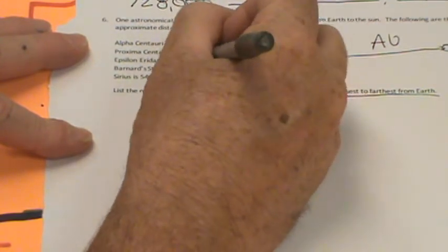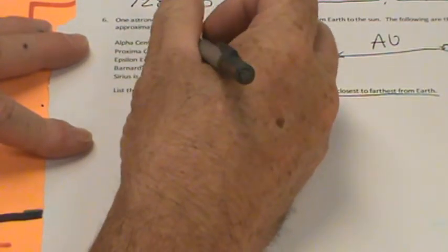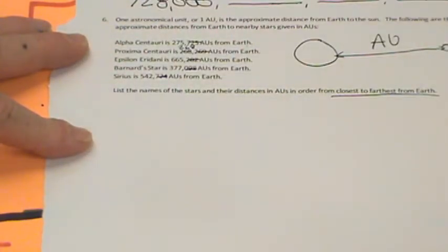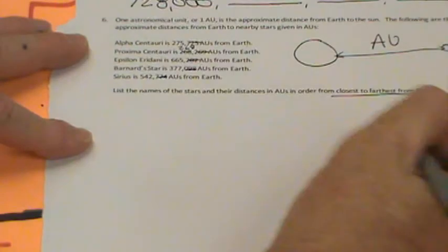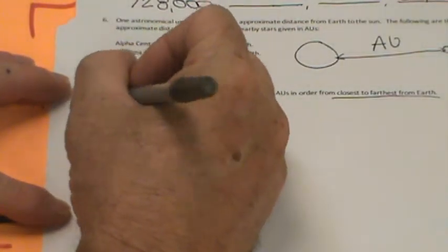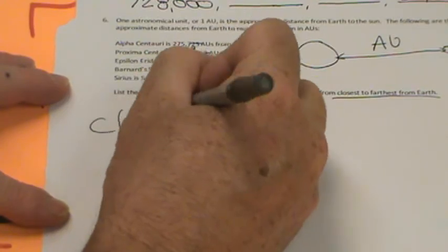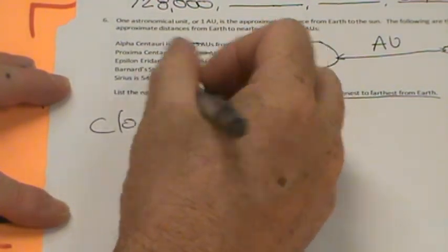So we're going to go here. It says list the names of the stars and their distances in AUs in order from closest to farthest away. We don't even need to worry about these three numbers. Oops, we do need to worry about that one, 268. The last three digits, because we don't need them, because all these numbers are different. You can easily see that in the hundred thousands. Well, we are out of time. So what I'm going to have you do is write the star that's the greatest from the closest. Just write the name of the star that's closest to Earth.